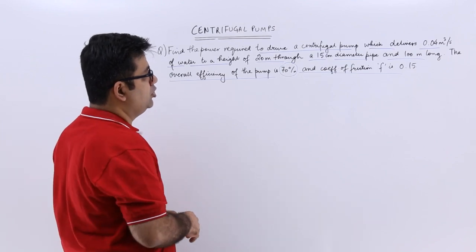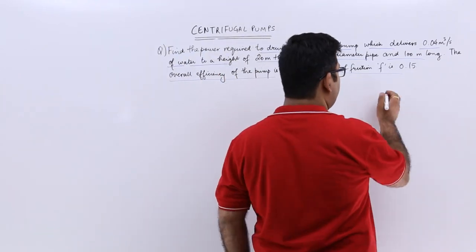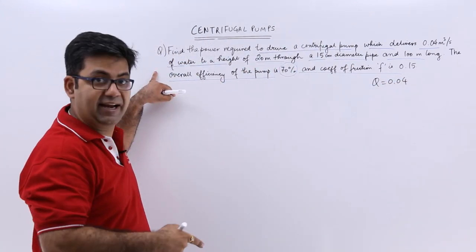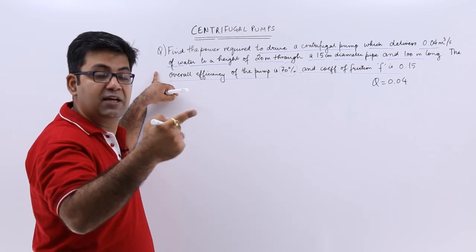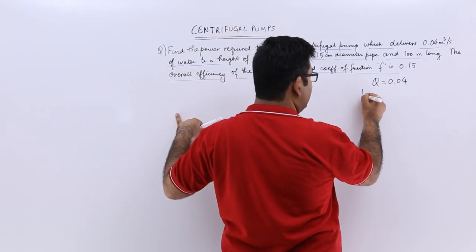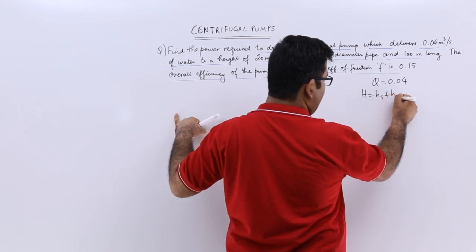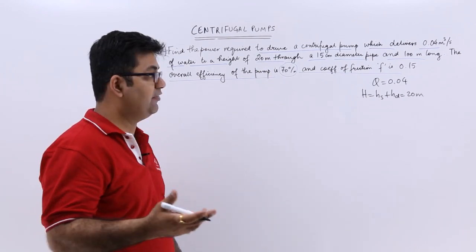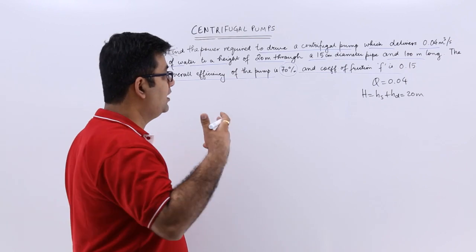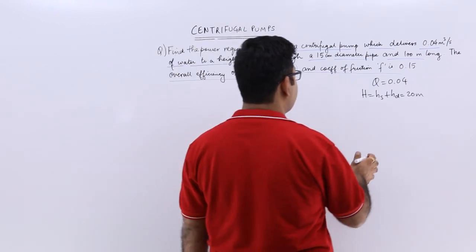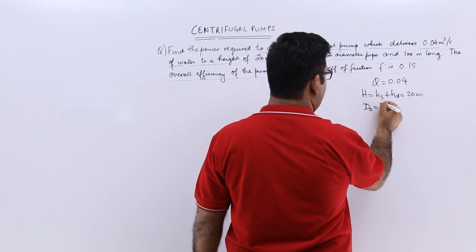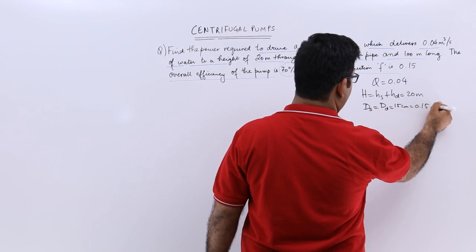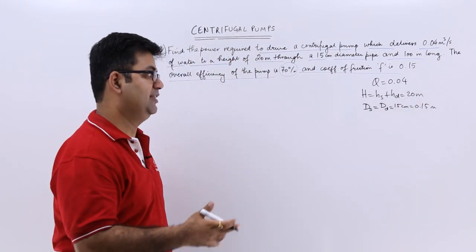So we need to find the power. We are given the discharge Q = 0.04 cubic meters per second. We have the total height H, which is the sum of the suction head and the delivery head, equal to 20 meters. The diameter of the pipe is 15 centimeters. We can assume that the suction pipe and the delivery pipe have the same diameter, so ds = dd = 15 centimeters, which is 0.15 meters.